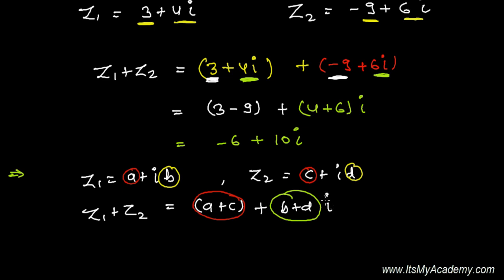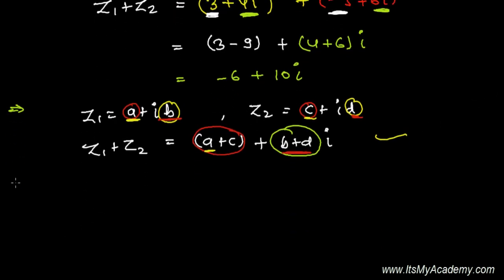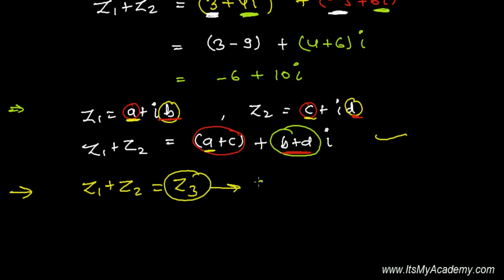Keep in mind that if you have three or more complex numbers, we follow the same process. Also, after adding two complex numbers, the result Z1 plus Z2 — let's call it Z3 — will also be a complex number. So the addition of two complex numbers results in another complex number.